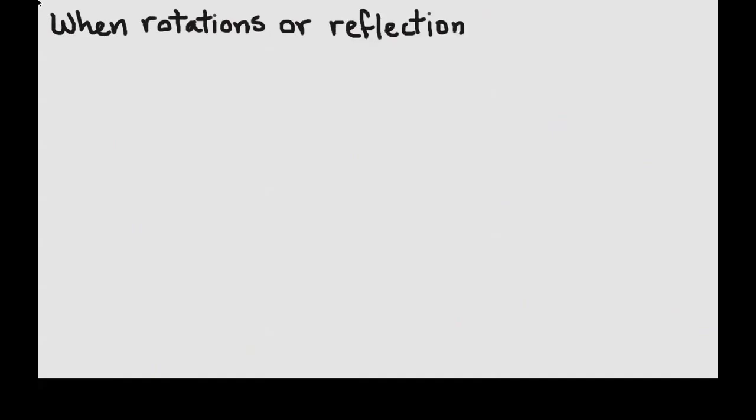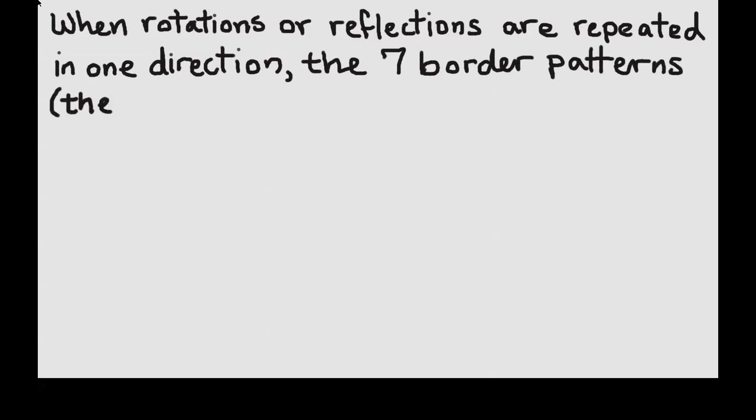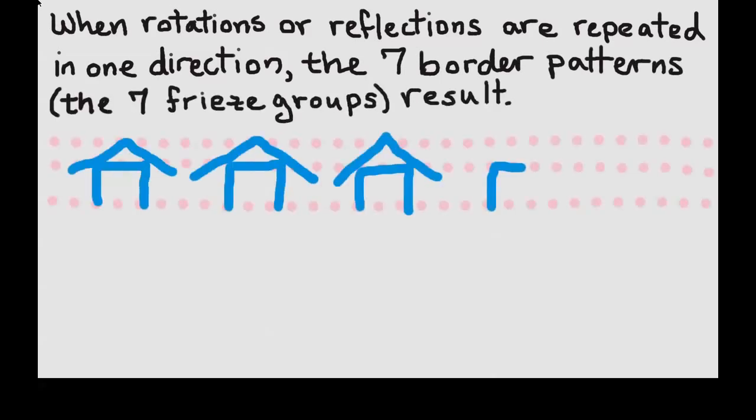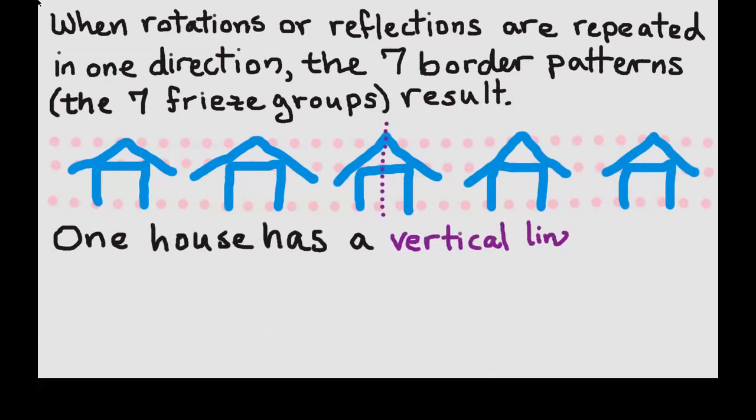When rotations or reflections are repeated in one direction, the seven border patterns, also called the seven frieze groups, are the result. Here I'm going to draw a row of houses. I notice that one house is a vertical line of reflection.